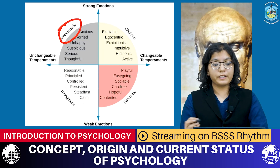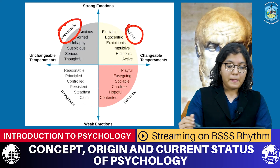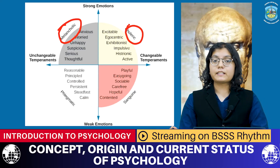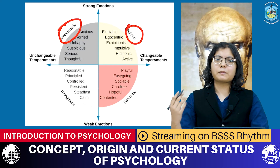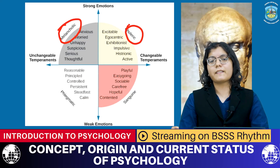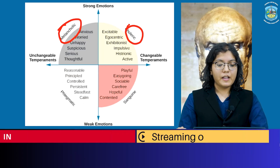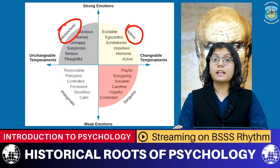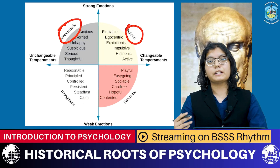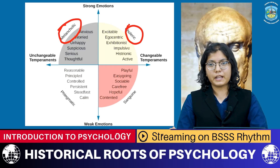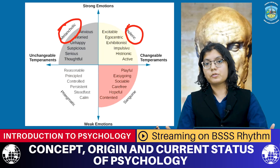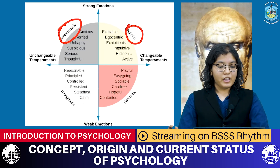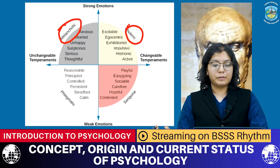Next we have choleric. People who are choleric tend to be excitable, egocentric, and exhibitionist — basically people who seek validation and attention from others. They also tend to be impulsive and histrionic, meaning very attention-seeking behavior. In fact, there is a personality disorder in DSM-5 known as Histrionic Personality Disorder. They are also very active people.